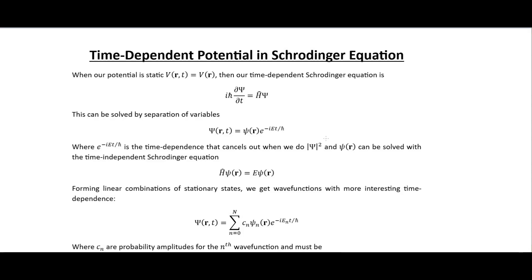In this video we're going to start looking at what could be called quantum dynamics. Griffiths says that so far what we've been looking at could be called quantum statics, but now we want to look at quantum dynamics. Quantum statics means essentially that our potential doesn't change in time, but if we want to do quantum dynamics we have to look at a potential that changes in time.